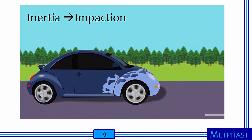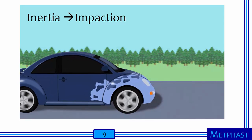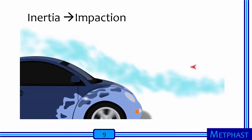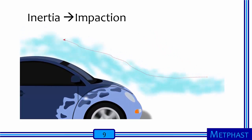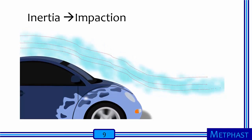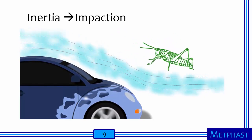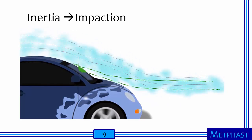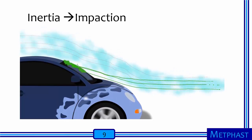Let's consider inertial forces now that act on a particle, which leads to impaction, like a bug hitting the windshield of a car. The windshield causes air to move up and over the car. The force of drag will cause a small bug to follow the airflow over the car, avoiding the windshield. In contrast, a big bug, like a grasshopper, resists drag because of its inertia. If the inertia of the big bug is sufficient, it deviates away from the airflow to hit the windshield and make a big mess. This process is called inertial impaction.